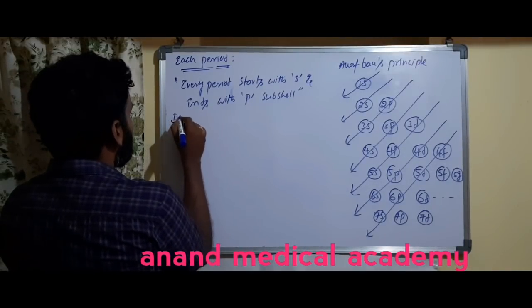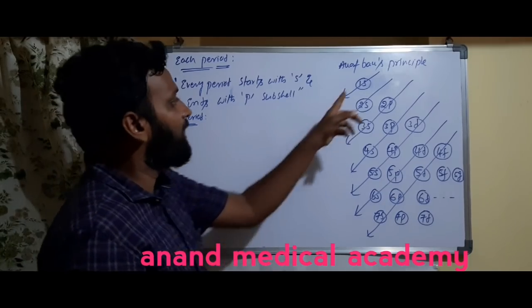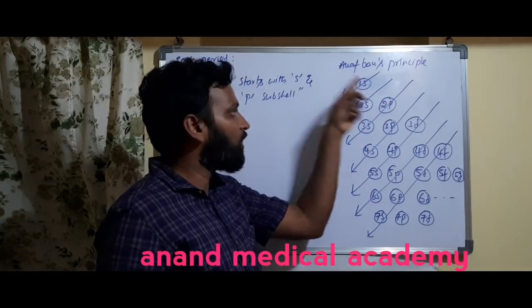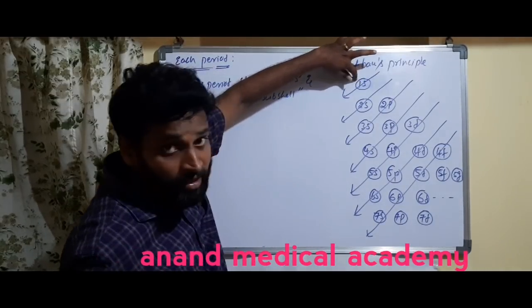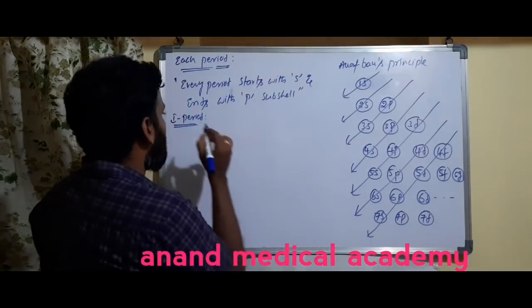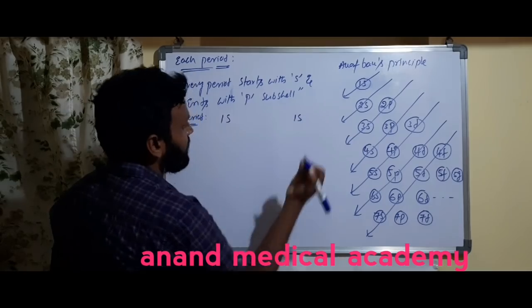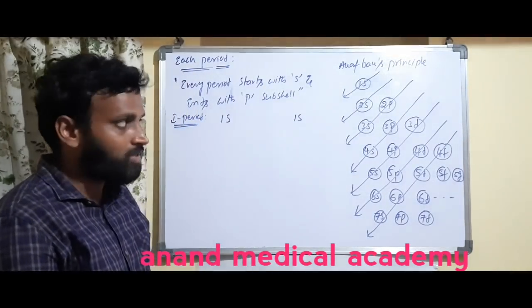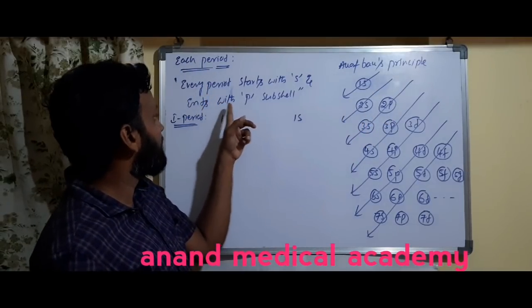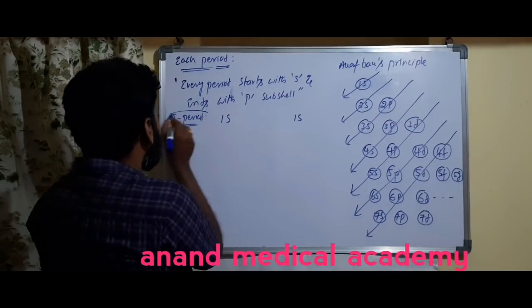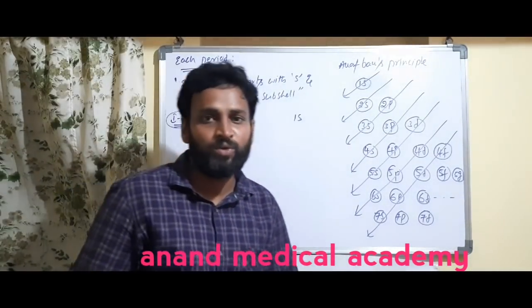The first period starts with 1s because the first electron enters the 1s sub-shell. It starts with 1s and ends with 1s only, because in the first shell (K shell) there is no P sub-shell. K shell consists of only 1s.